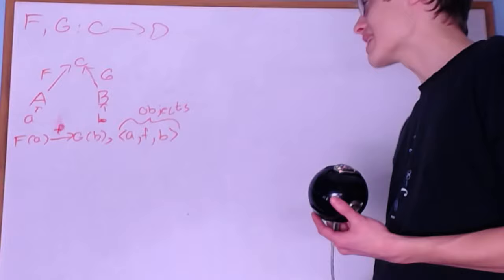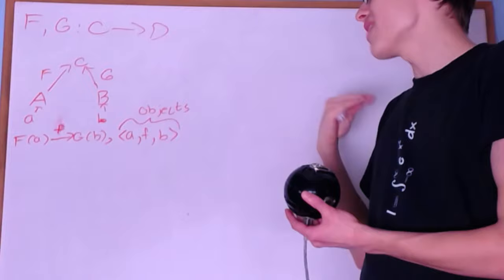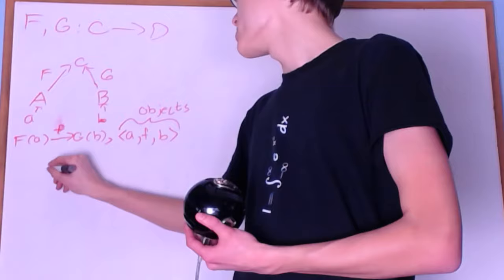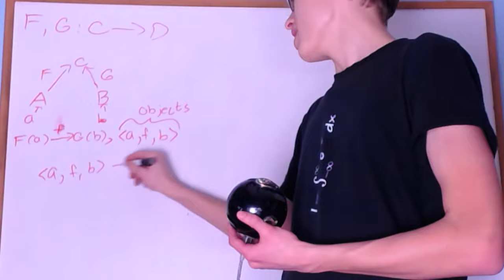Now if we have objects, we should probably have arrows. So what would an arrow be? It would be something that takes you between two triples. So let's say we have (A, f, B) and we send that to (A', f', B').